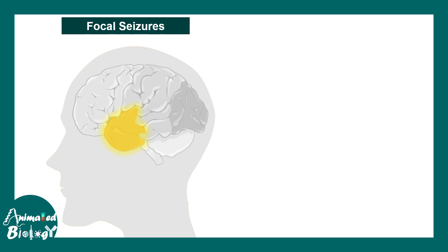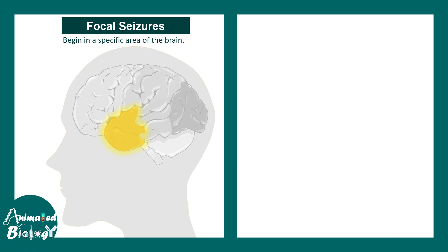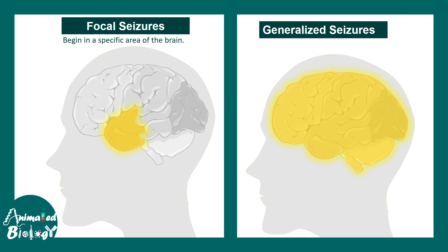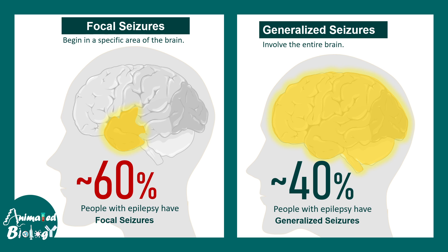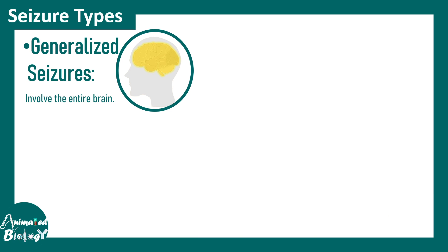When it comes to clinical features, seizures in epilepsy could be focal seizures, restricted to or beginning in a specific brain area, or generalized seizures, which involve the entire brain. In 60 percent of cases the seizure is focal; in less than 40 percent of cases there is a generalized seizure, which is more devastating.